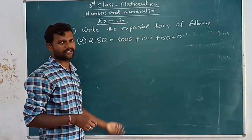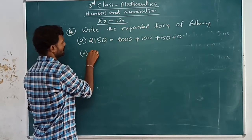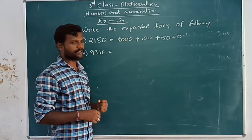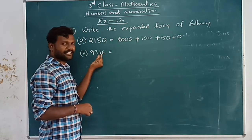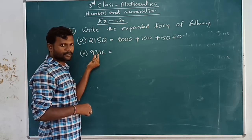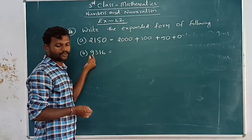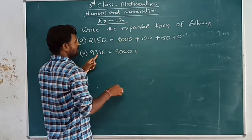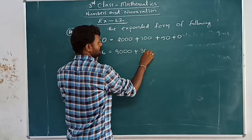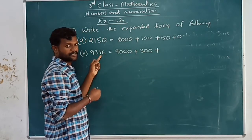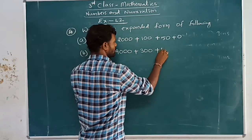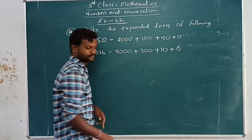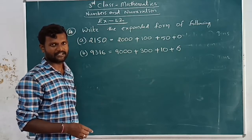Simply in one line we will complete it. Another example: nine thousand three hundred and sixteen. Six in ones place, one is in tens place, three is in hundreds place, nine is in thousands place. So: nine thousands, plus three hundreds, plus one ten (one tens are ten), plus six ones are six.